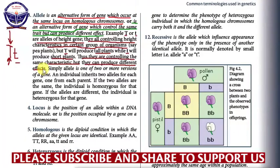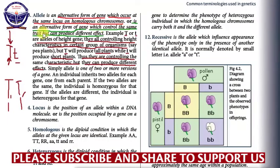It is not necessarily always that alleles produce different effects. For example, if we have capital T and capital T together, both are alleles, but they will produce the same effect. Our definition says alleles 'can' produce different effects — 'can' means 'able to', not 'should' or 'must'. So sometimes alleles can produce the same effect, and sometimes they can produce different effects, depending on the situation. An allele is one of the two or more versions of a gene.